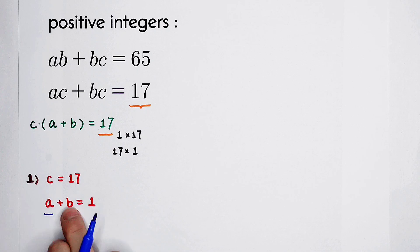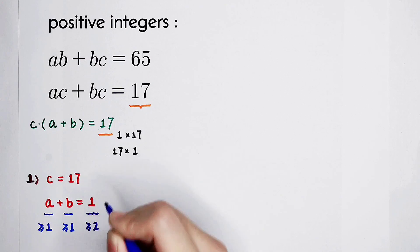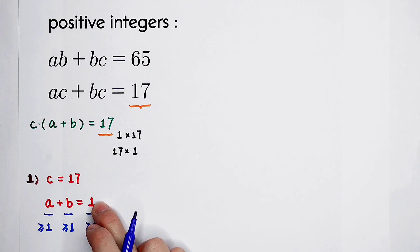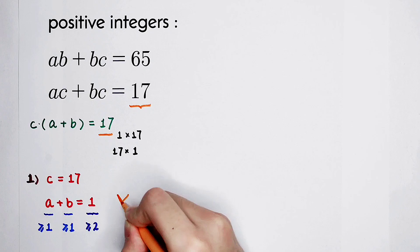Since a and b are both positive integers, a should be greater than or equal to 1, and b as well. So a plus b should be greater than or equal to 2. But 1 is smaller than 2. So this case, we should desert.